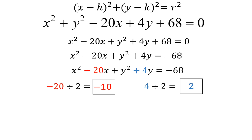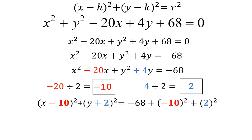The next step is a little confusing, so I'll explain as I go. I'm going to start writing the equation of my circle. I do parenthesis x, and then the boxed number associated with x — which was negative 10 — I literally just put it in parentheses with my x, and close parentheses squared. Then plus parentheses y, and I use the boxed number associated with y — which was 2 — close parentheses squared. That equals negative 68, and then I add the boxed numbers squared: negative 10 squared and 2 squared.